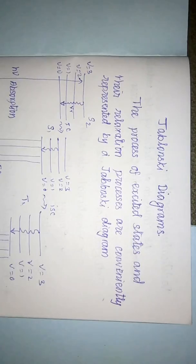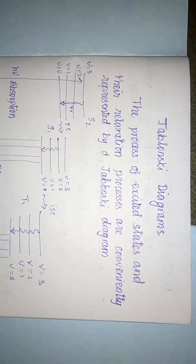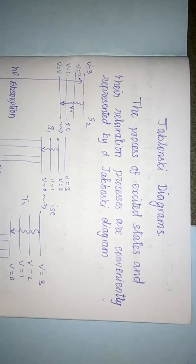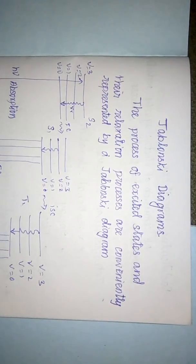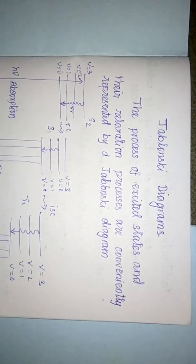In this session we will see the Jablonski diagram. This diagram explains the excitation process of organic molecules during the photochemical process — it excites from the ground electronic state to higher electronic states. There are various kinds of deactivation processes: radiative transitions and non-radiative transitions. We'll see these processes in this session.